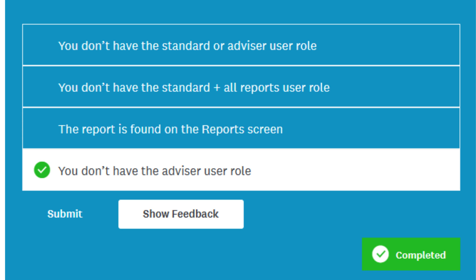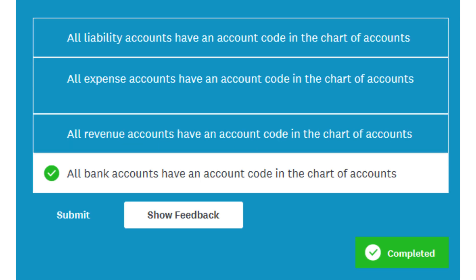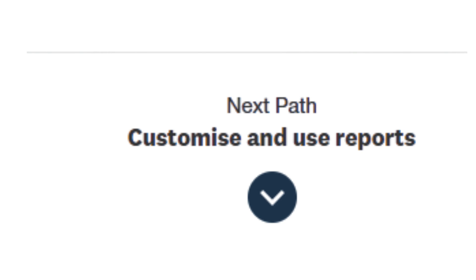Additionally, the Review and Adjust Transactions step encourages users to use Xero's reports, like the account transactions report or general ledger, to analyze and validate the correctness of entries. By comparing these reports with source documents, bank statements, or other external data, users can identify anomalies and make informed adjustments.